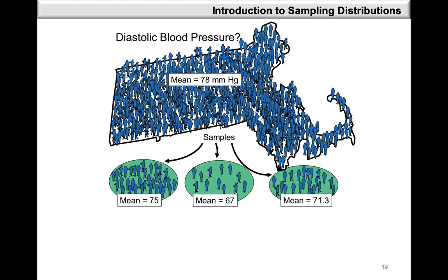Looking at a population where we're interested in diastolic blood pressure, we calculate a fixed population mean of 78. But if we take samples, the first sample average is 75, the second is 67, and the third is 71.3. So the sample average is not fixed across all samples — it is actually a variable.